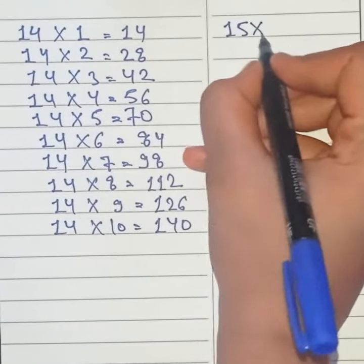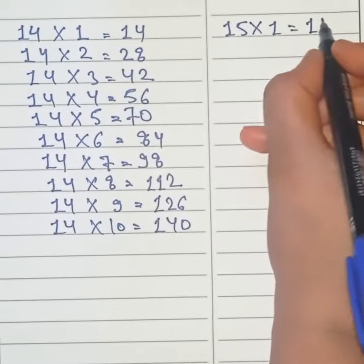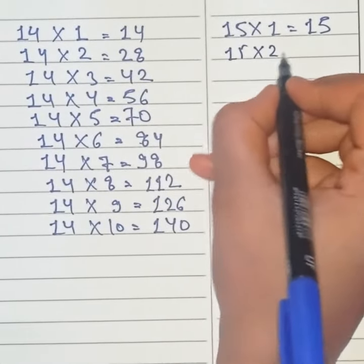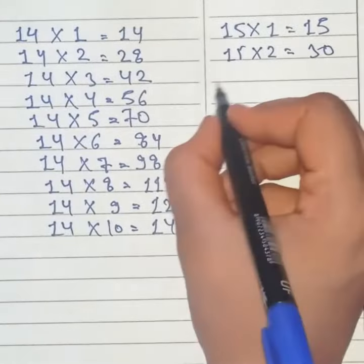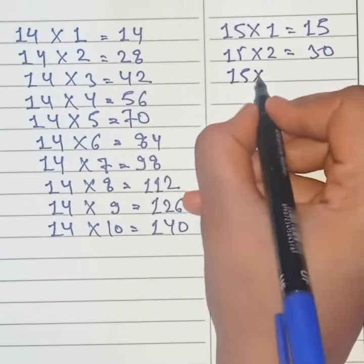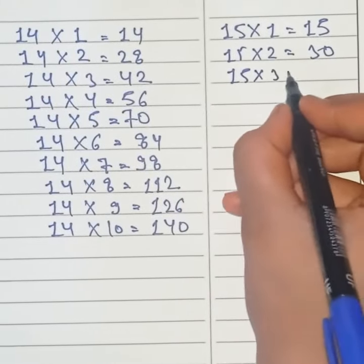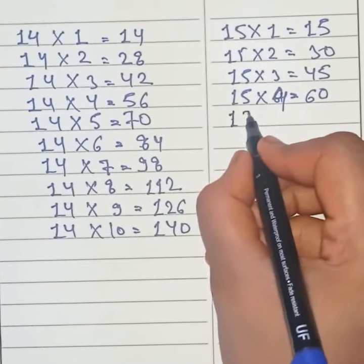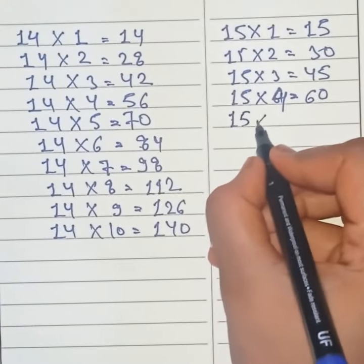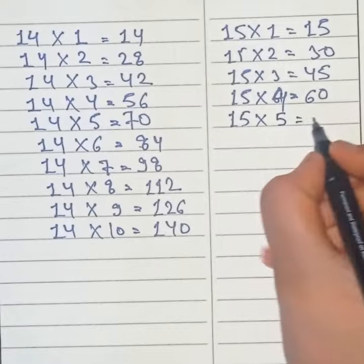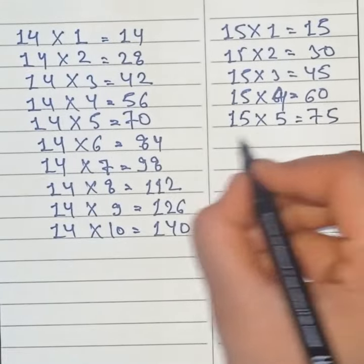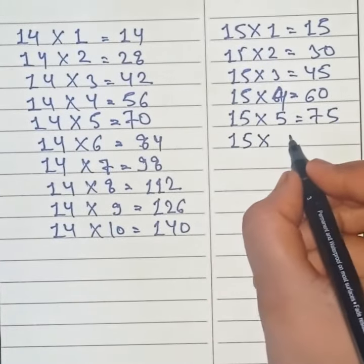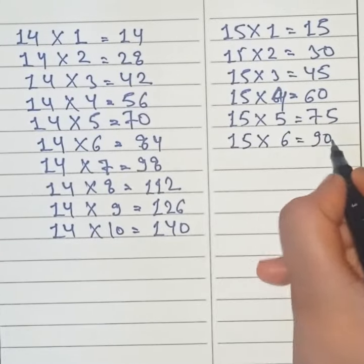15 1s are 15. 15 2s are 30. 15 3s are 45. 15 5s are 75. 15 6s are 90.